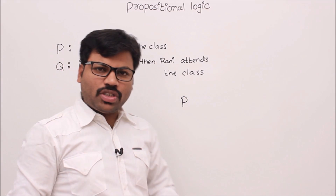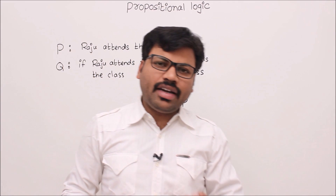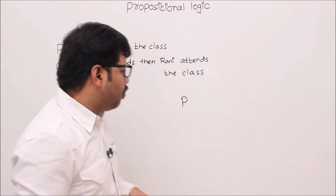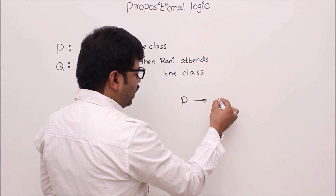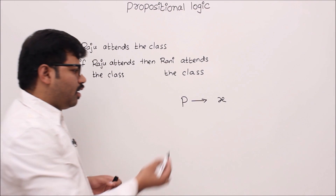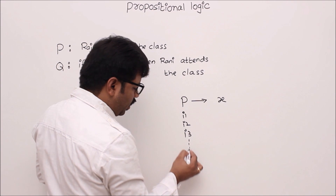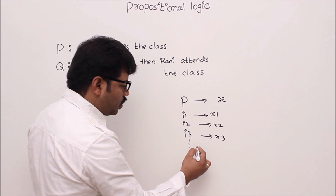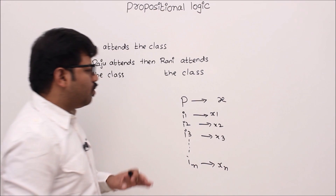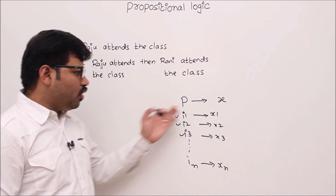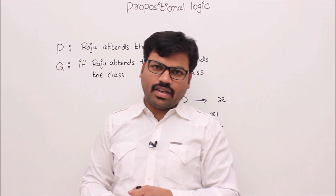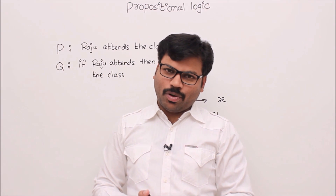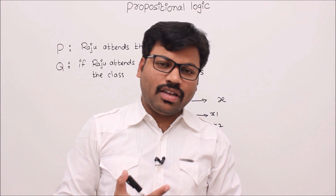If you write a program, that program is supposed to give output. How can you guarantee that whatever program you have written gives the expected output? You might take inputs i1, i2, i3, and so on, execute the program, and record outputs x1, x2, xn. You take some test cases, run your program, and see the output. If the output is correct, you can most probably say your program is correct — but unfortunately, that's only most probably correct, not exactly correct, because your program only works for the test cases you tried.